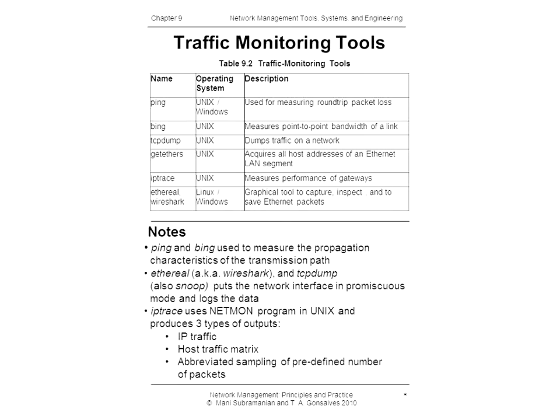Now we have network traffic monitoring tools. This table lists some of the traffic monitoring tools. One of the tools is ping, which we have already mentioned as a status monitoring tool. By repeatedly executing ping with a large repeat count, for example ping -c 100, and measuring how many were successfully received back, we can calculate the percentage of packet loss, which is a measure of throughput. It also shows the round-trip packet transmission time.